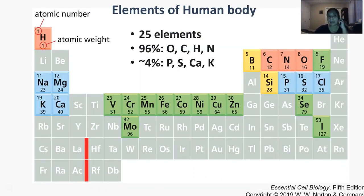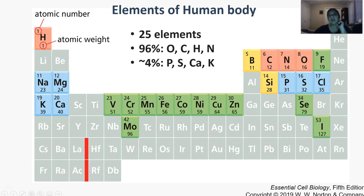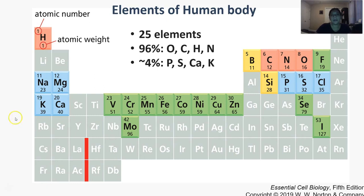Four atoms basically make up 96% of the human body and a lot of biological life. These are hydrogen, carbon, nitrogen, and oxygen. As we go through today's lecture, you'll see why. The remaining atoms make up approximately the remaining 4% of your total system. So there are 25 total elements on the periodic table found in biological systems, with the majority accounted for by these eight key elements.